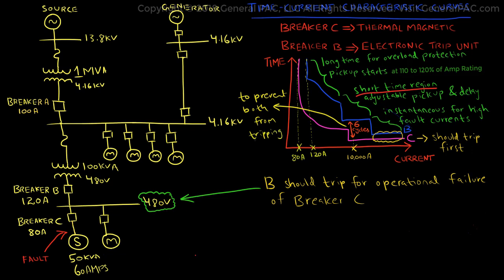With this scenario, breaker C protects the load up to the maximum fault level on the terminals of the load. It also protects against overloads. Breaker B protects the 480 volt bus and acts as a backup protection device for breaker C. We have achieved good coordination for this particular scenario.